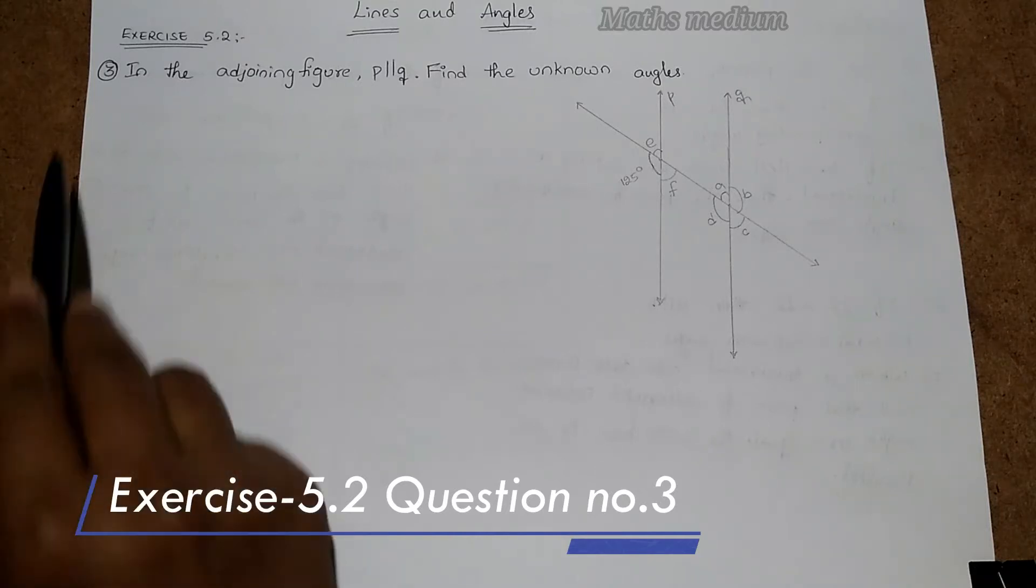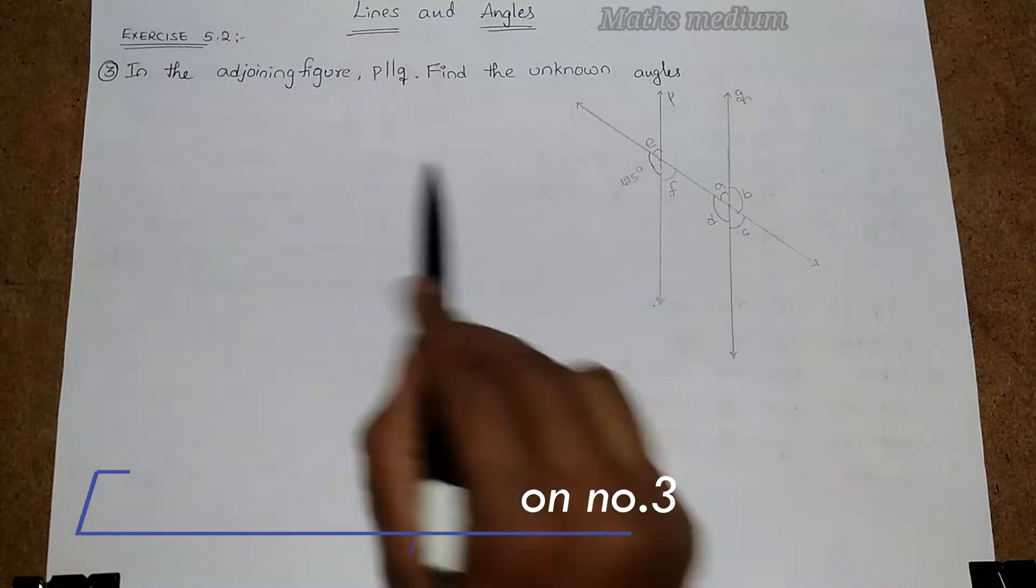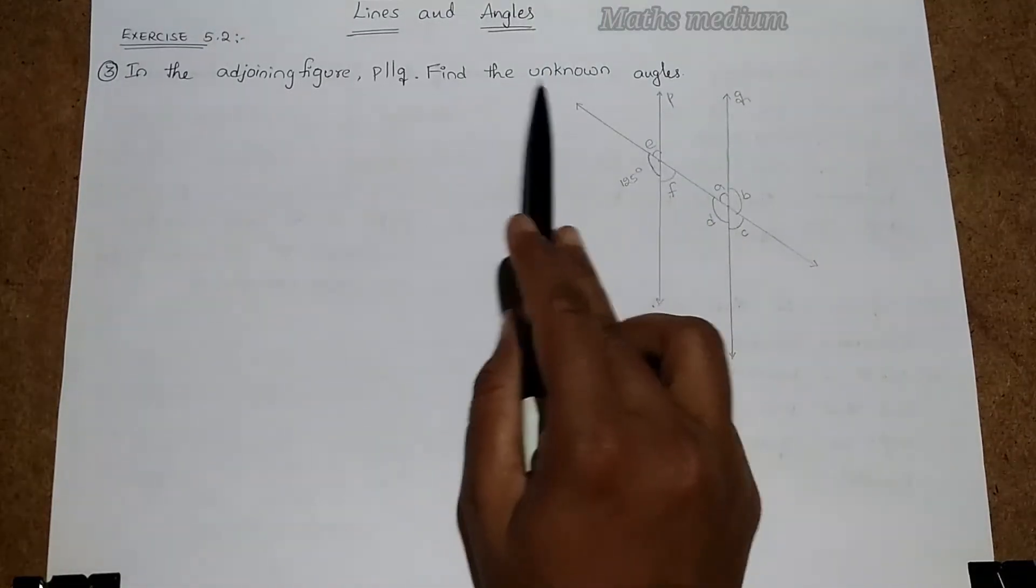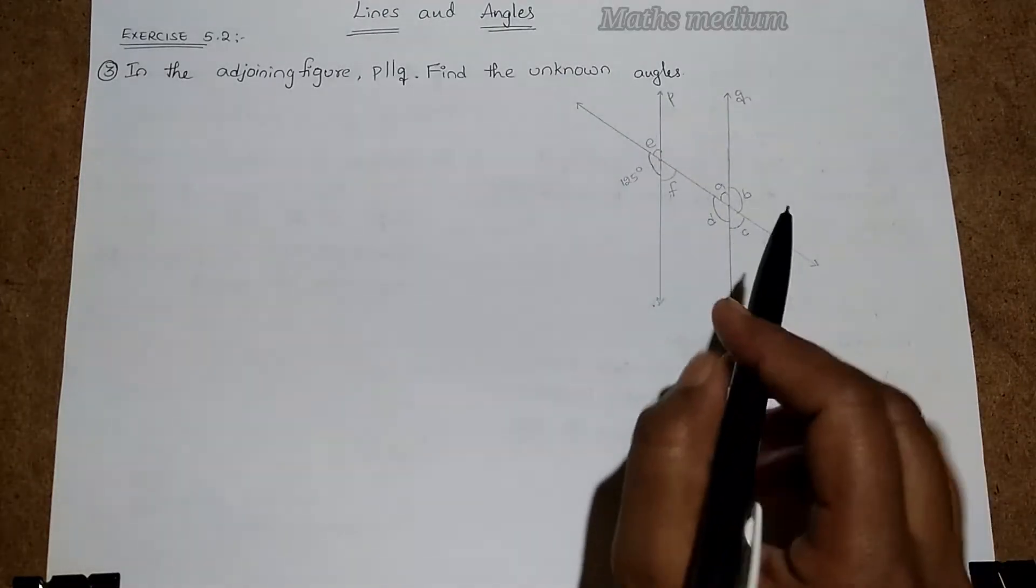Question number 3: In the adjoining figure, this is the figure, P is parallel to Q. Find the unknown angles. In this figure we can say easily.